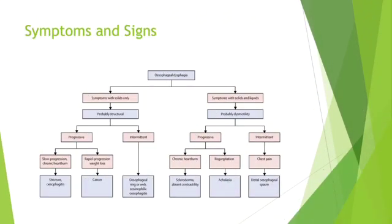This diagram helps us with better approaching dysphagia. Regardless of the case, we need to know first whether the symptoms are only with solids or with solids and liquids both. This can give us some probable options. The next most important question is whether the dysphagia is intermittent or progressive. Although this algorithm doesn't include all etiologies, it helps us approach the case and find the etiology.